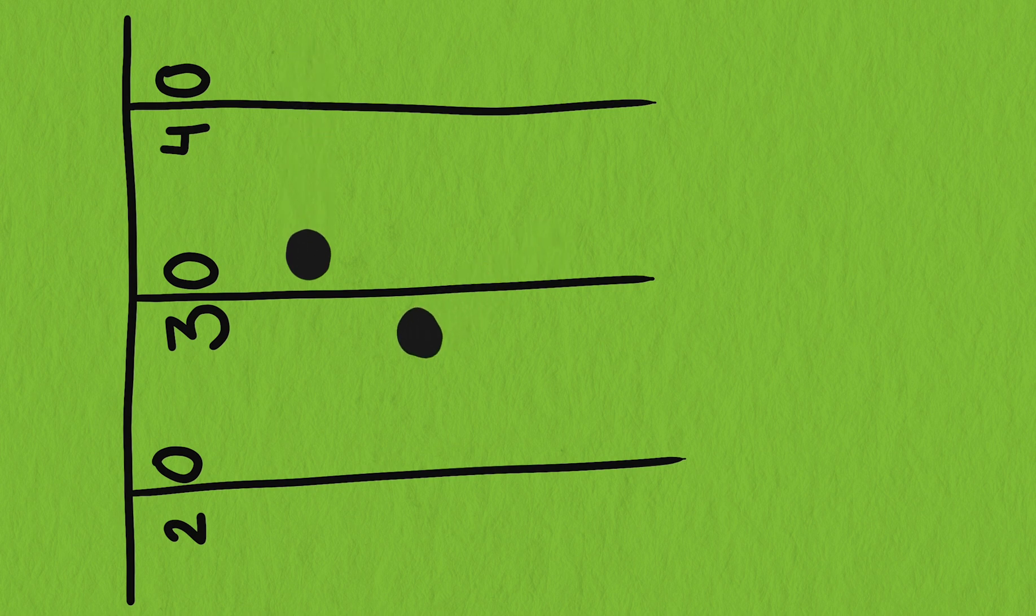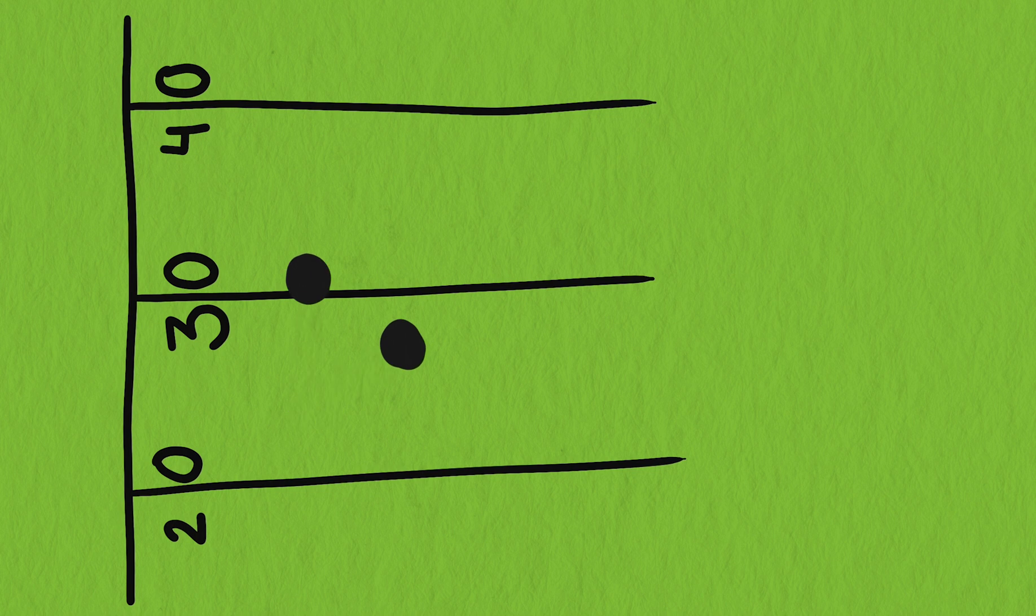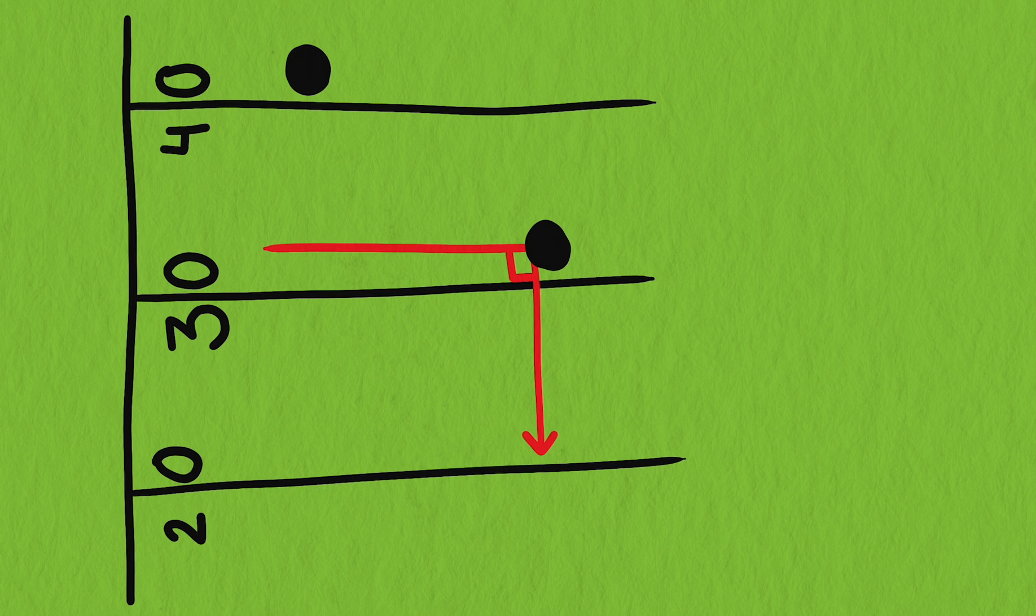The football situation is different than the pedestrian situation though in two ways. First, the defensive back and the ball carrier are roughly the same speed. If they're exactly the same, then the value of r is 1, and the optimal angle is 90 degrees. That means the defensive back should run directly down the field and not toward the ball carrier at all.